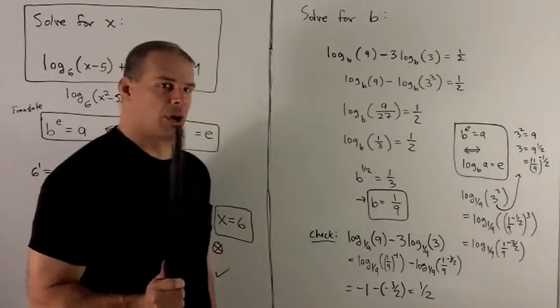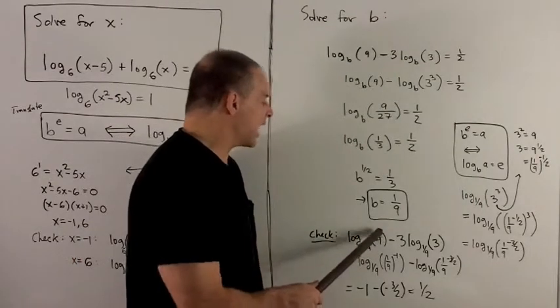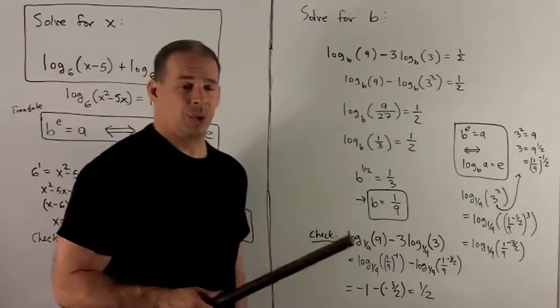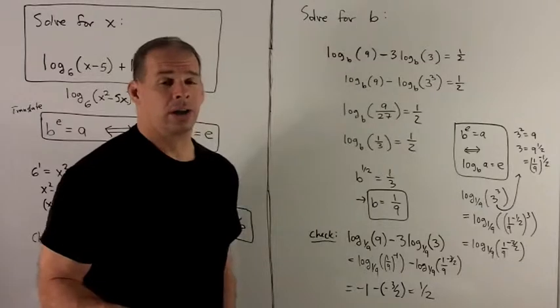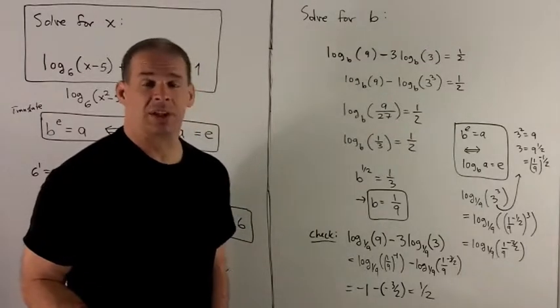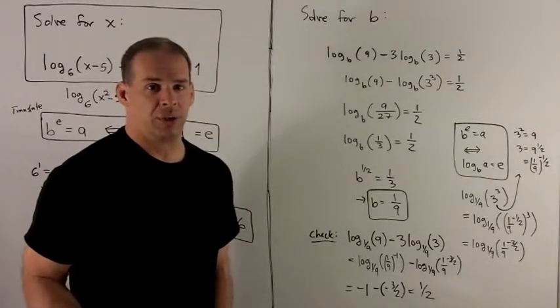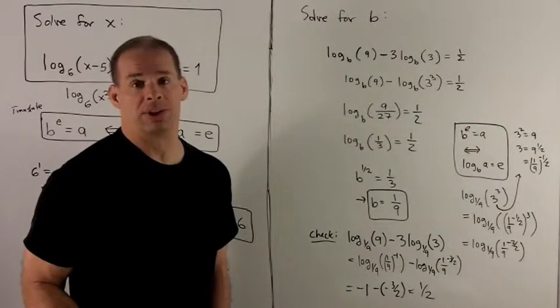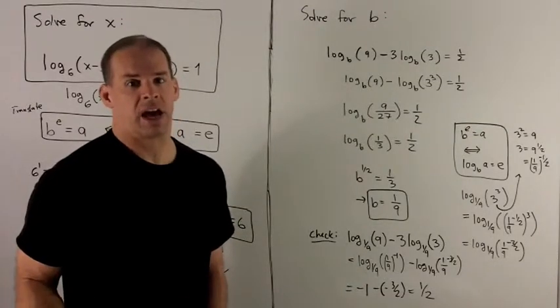the trick is to try to turn whatever number you have on the inside into 1/9 to a power. So this takes a little bit of gymnastics, but you can eventually do this, and this is just for the check, so you may want to skip this altogether if time's an issue.